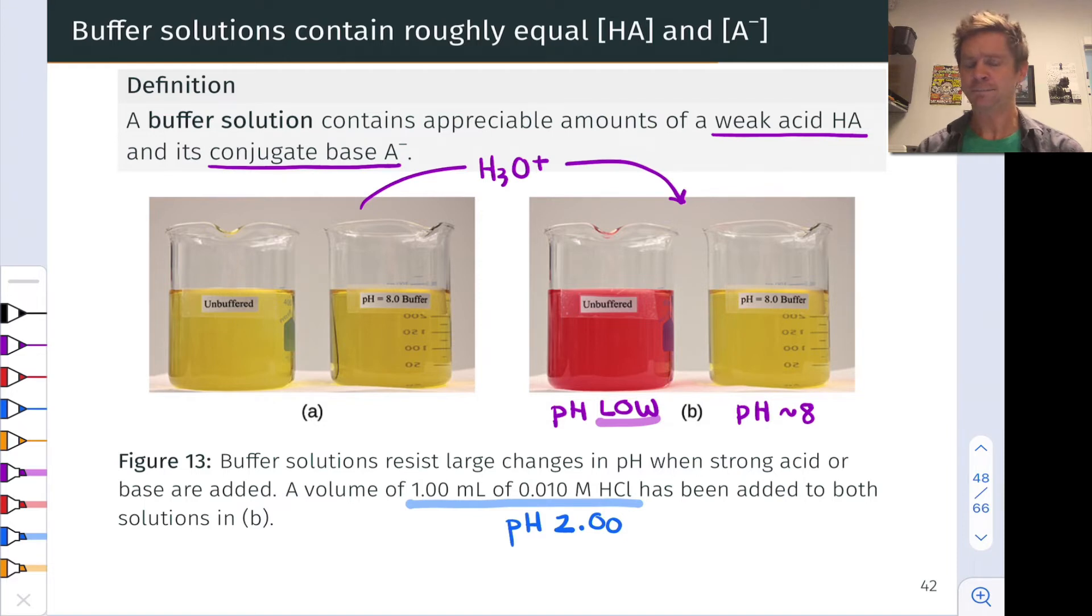But notice the pH 8 buffer, despite the addition of this hydronium ion, has not turned red. The pH is quite a bit higher, approximately equal to 8. The pH hasn't changed by much. So the buffer has somehow resisted a large change in pH despite the addition of a strong acid. It would do the same upon addition of a strong base, for example, a hydroxide salt solution.